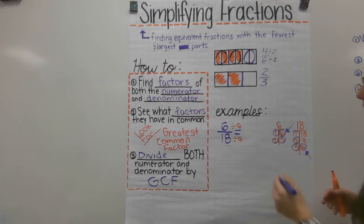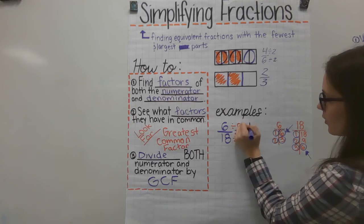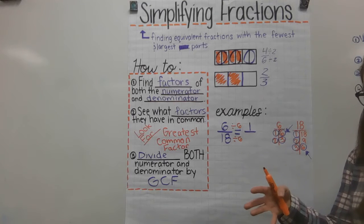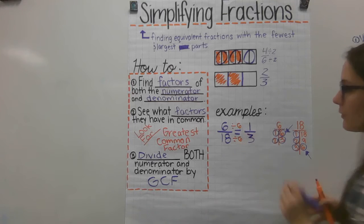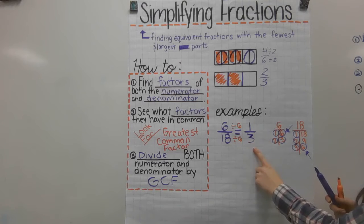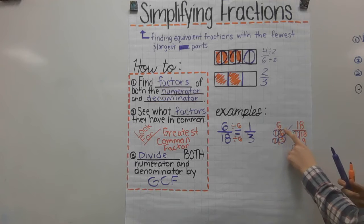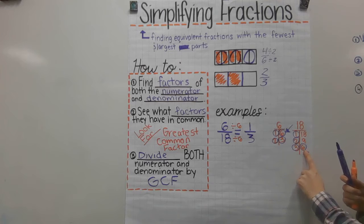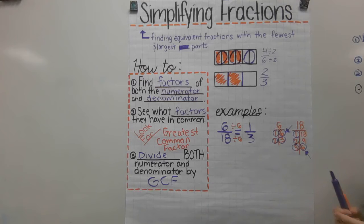So I'm going to divide my numerator by 6 and my denominator by 6 — that is the greatest common factor. For every 6 pieces, I'm combining them into 1. So 6 divided by 6 equals 1, and 18 divided by 6 equals 3. This shows that 6/18 equals 1/3. And if you look at the factor pairs — 6 divided by 6 gives the numerator factor pair, and 18 divided by 6 gives the denominator factor pair.